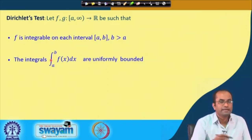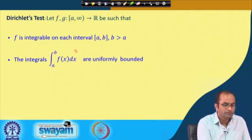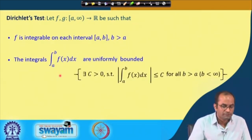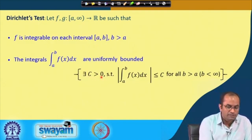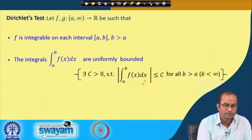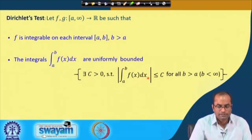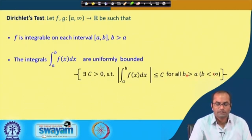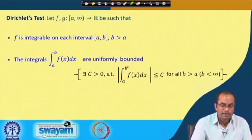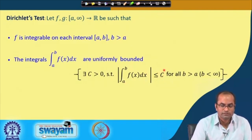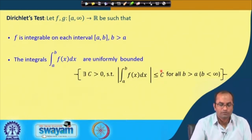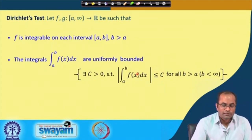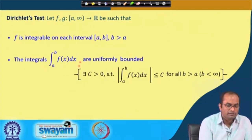Uniformly bounded means there exists a constant c greater than 0 such that the absolute value of the integral from a to b of f(x) dx is less than or equal to c, for all b greater than a. Since c does not depend on b, we call these integrals uniformly bounded — that is, the bound is independent of b.